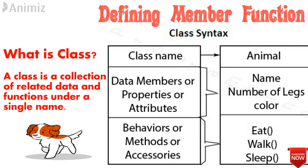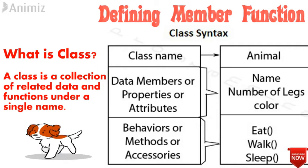What is a class? A class is a collection of related data and functions under a single name. A class consists of three major parts: class name, data member — which is also called properties or attributes — and member function, which is also called behaviors or accessors.